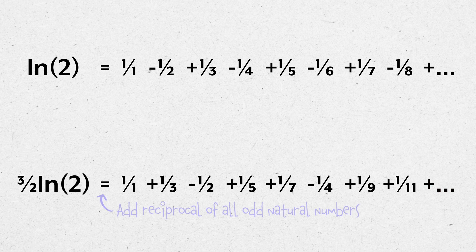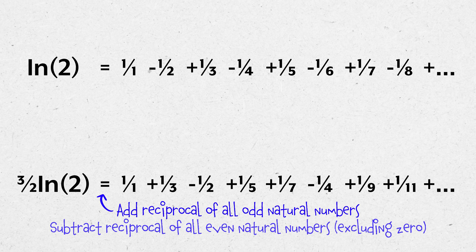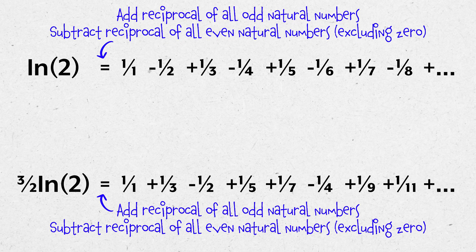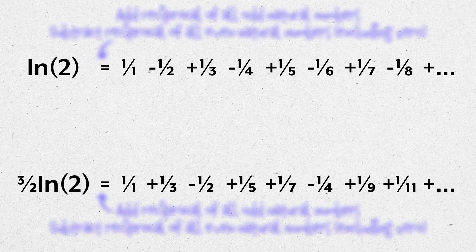In the complete infinite series, we add the reciprocal of all odd natural numbers and subtract the reciprocal of all even natural numbers aside from 0. But in the ln 2 infinite series, we also add the reciprocal of all odd natural numbers and subtract the reciprocal of all even natural numbers aside from 0. This suggests that ln 2 equals 3/2 ln 2. What's going on here?